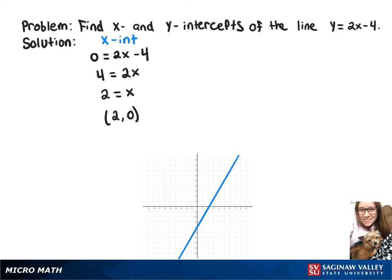Now to find the y-intercept, as you can see in the equation, your b-value is negative 4, but to test it out, we can put in x equals 0. So we have y equals 2 times 0 minus 4, which leaves us with y equals negative 4. So our y-intercept is (0, negative 4).